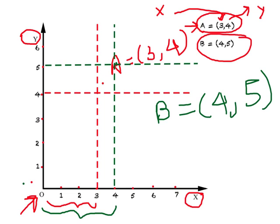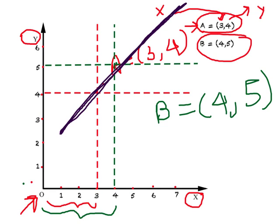We can join points like A and B, and what we get is a line or a curve. Note that this line is rising up, or upward sloping. What this means is: as you increase the value of x, the value of y increases as well, and if you reduce the value of x, the value of y falls. In other words, both variables x and y move in the same direction — if x increases, y increases; and if x falls, y falls as well.